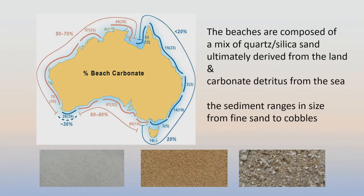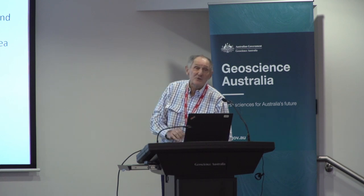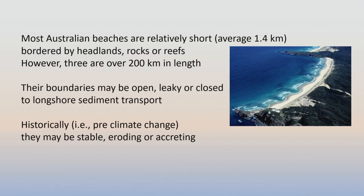There's tremendous variation not only in the nature of beach systems but in the type of sediment that composes them. They're normally composed either of quartz/silica or carbonate detritus derived from the shelf or seagrass meadows. In the east it's predominantly quartz-dominated; in the south and west it's dominated by carbonate material. Half of Australian beach sediment is generated in the nearshore or shelf, which is another particular consideration for climate change impact on carbonate production.